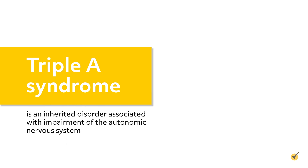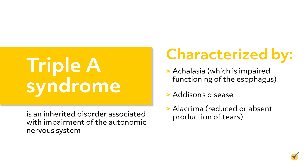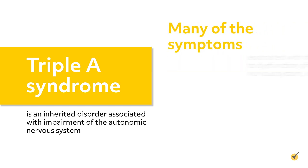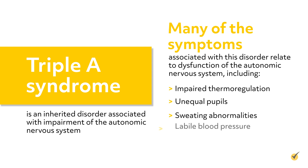Triple A syndrome is an inherited disorder associated with impairment of the autonomic nervous system. Triple A syndrome is characterized by achalasia, which is impaired functioning of the esophagus, Addison's disease, and alacrima, which is reduced or absent production of tears. Many of the symptoms associated with this disorder relate to dysfunction of the autonomic nervous system, including impaired thermoregulation, unequal pupils, sweating abnormalities, labile blood pressure, and impaired digestion.